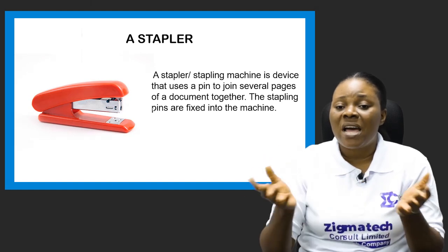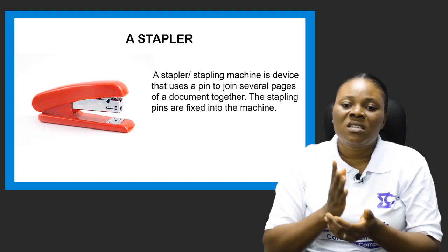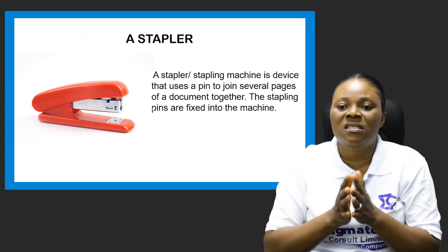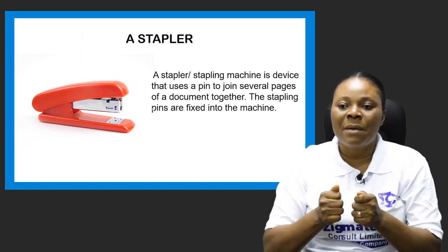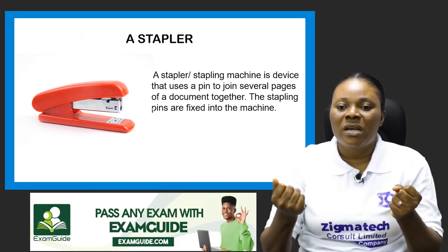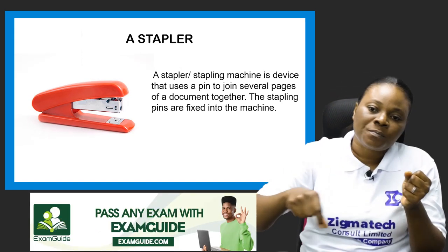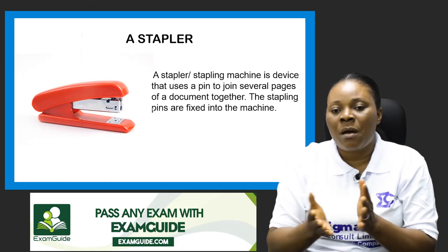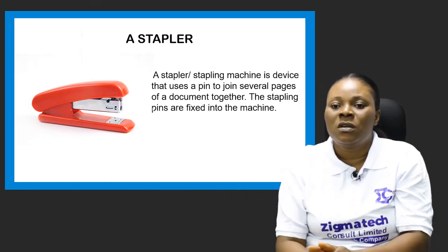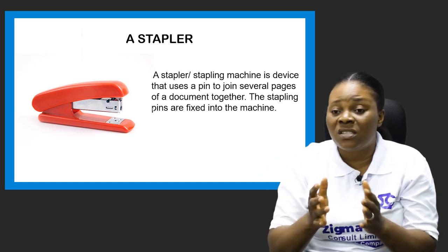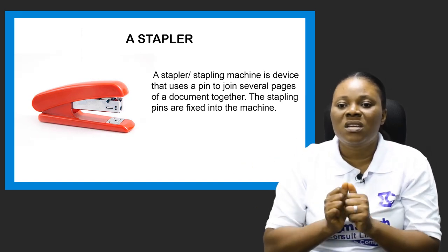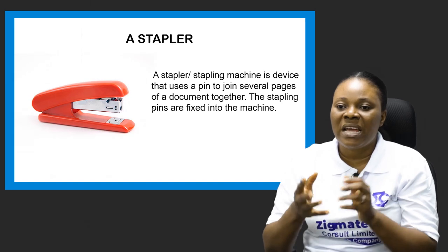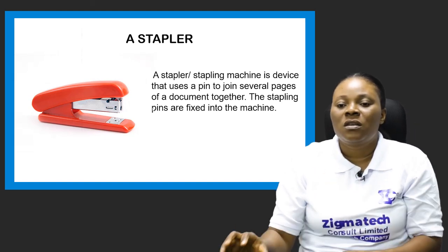Another common office equipment is the stapler or stapling machine. There are different sizes of this stapling machine. It is used to join several pages of documents together using what is called a staple pin. You open the machine, place your pins in the long compartment, couple the machine together, put your paper underneath, and press it down — so it joins different pages of documents together using a pin.